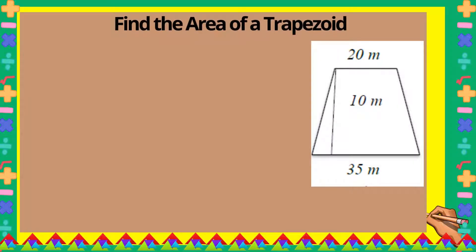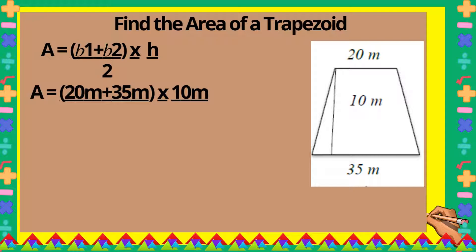Given this example, let's find the area of a trapezoid. We are given 20 meters, 10 meters, and 35 meters. The upper part is base 1 and the lower part is base 2.